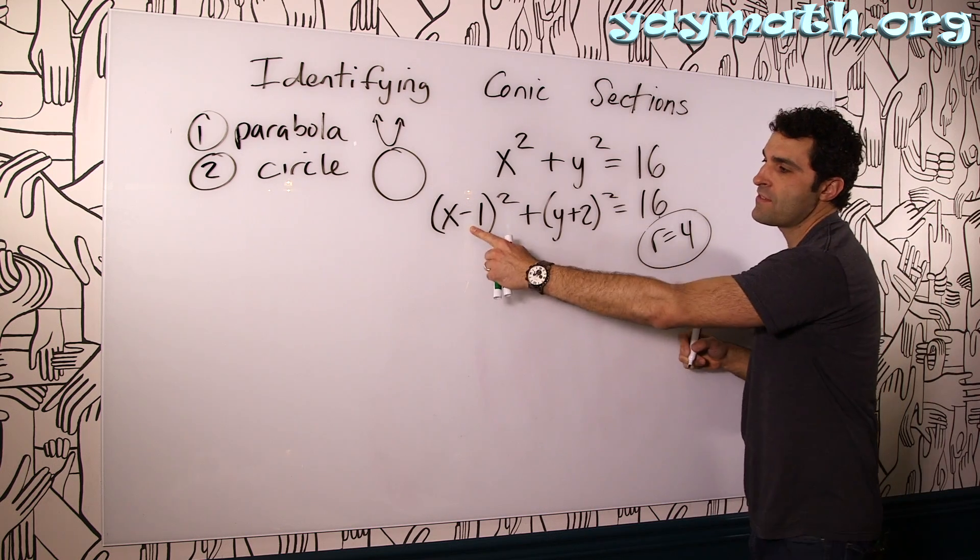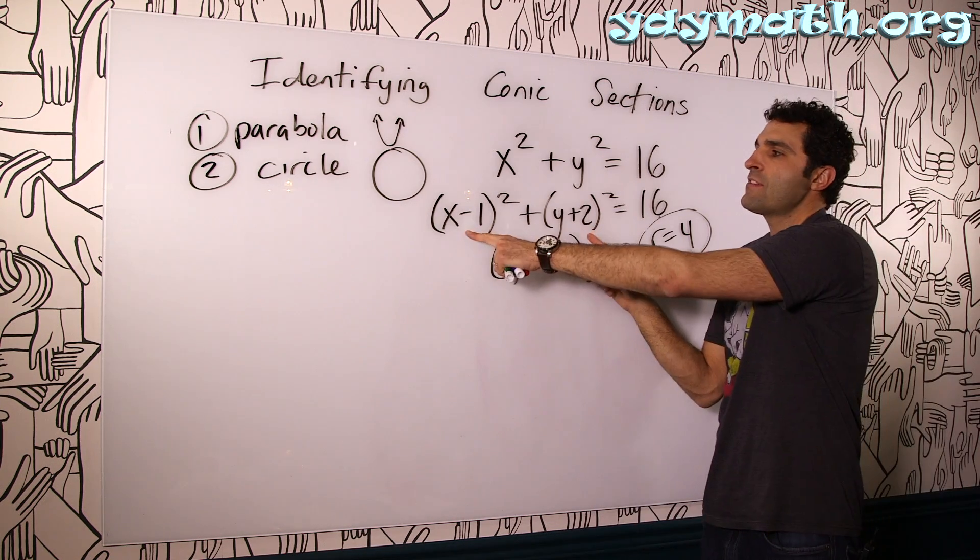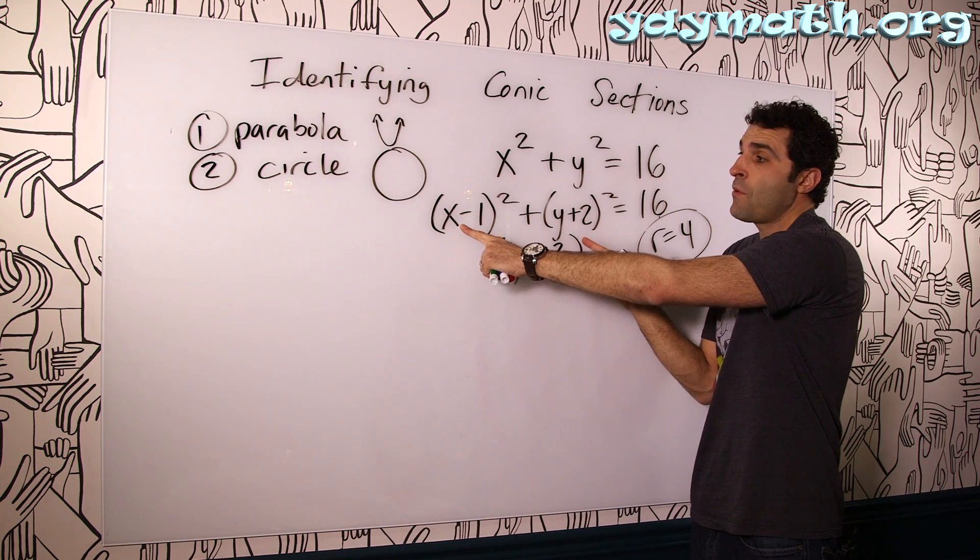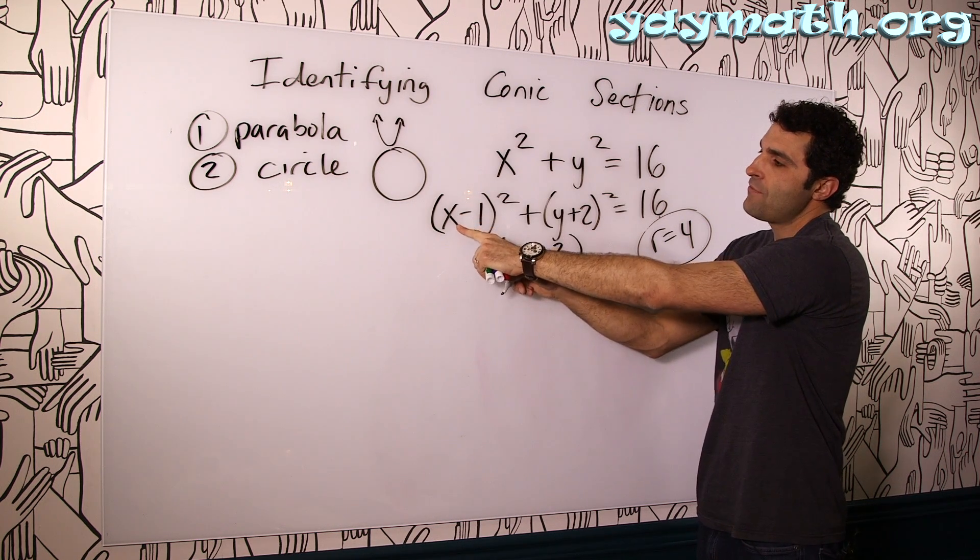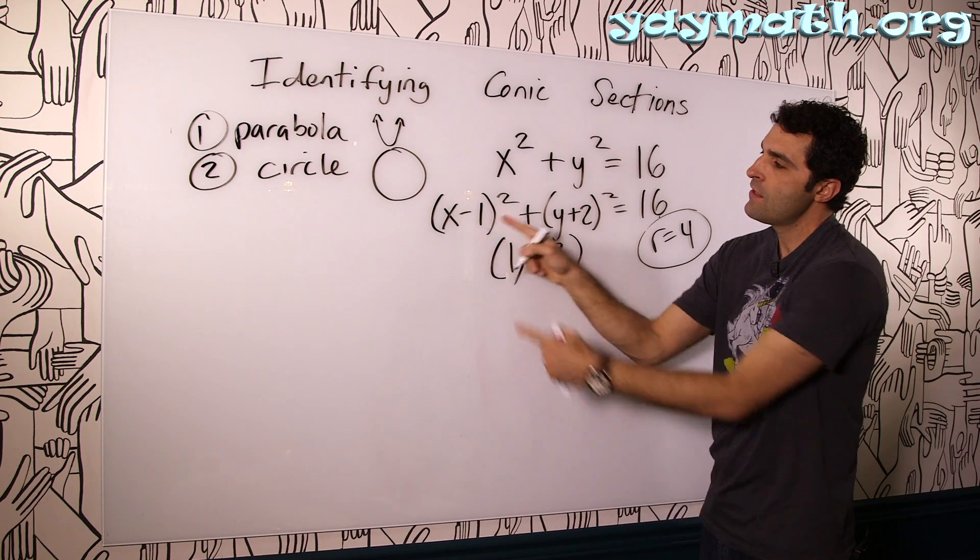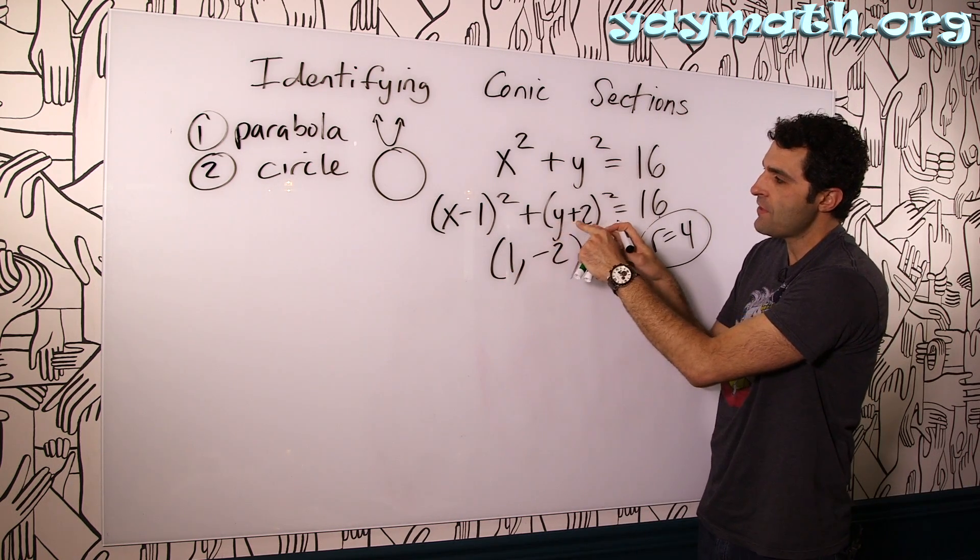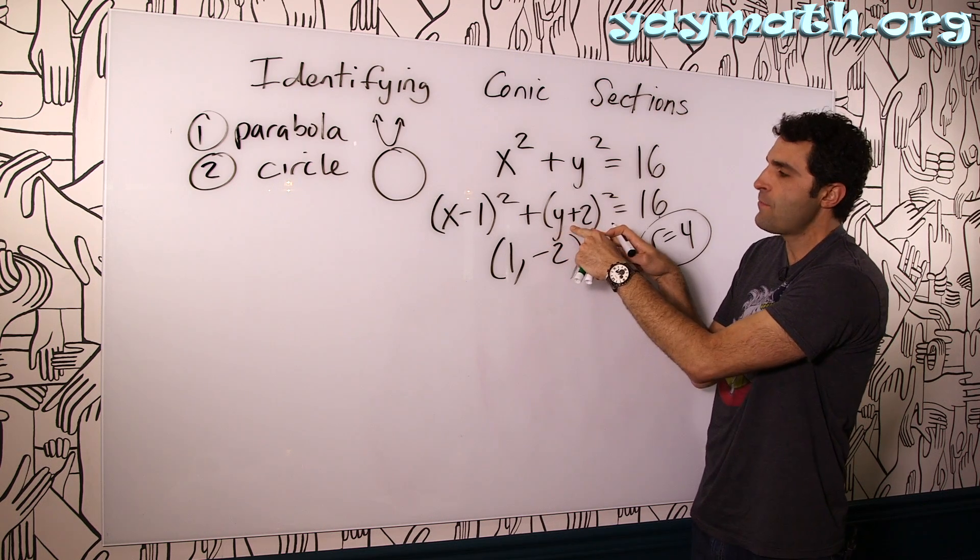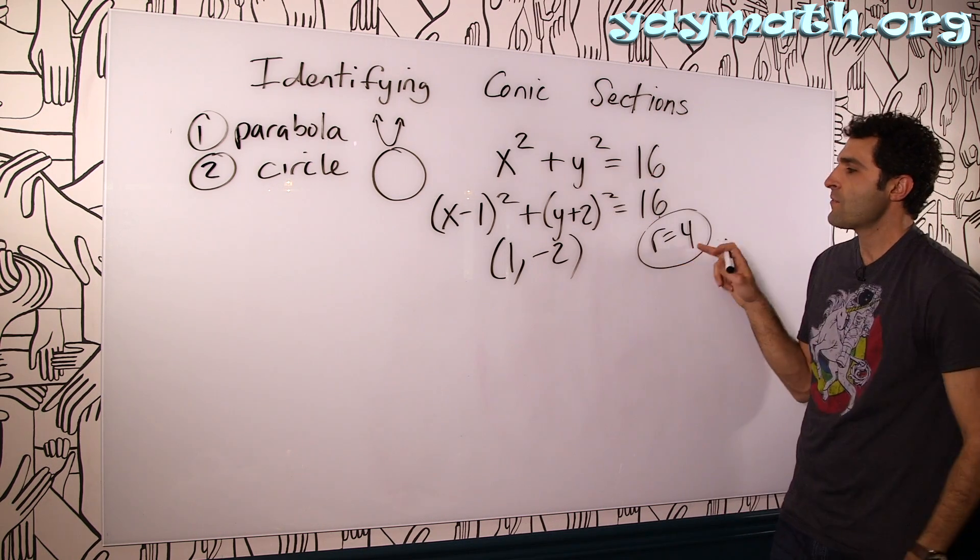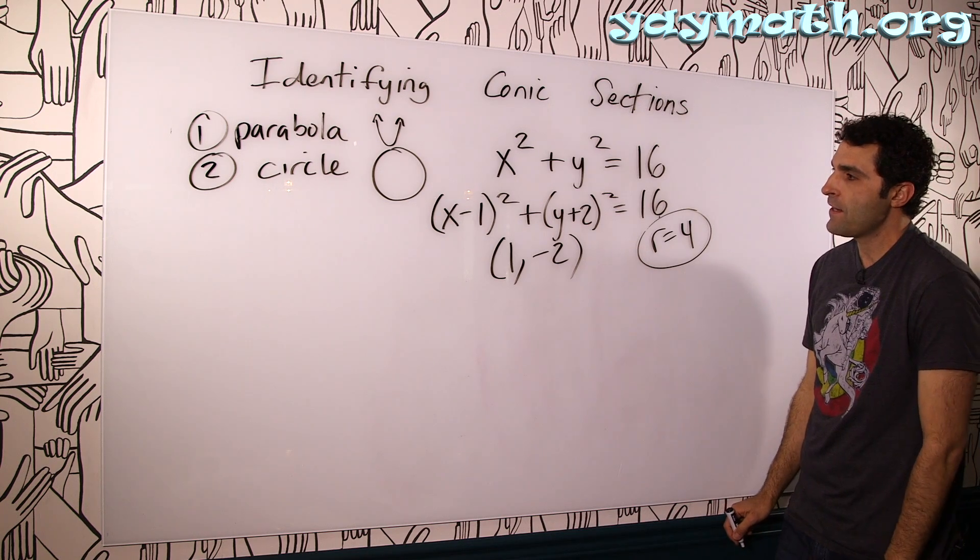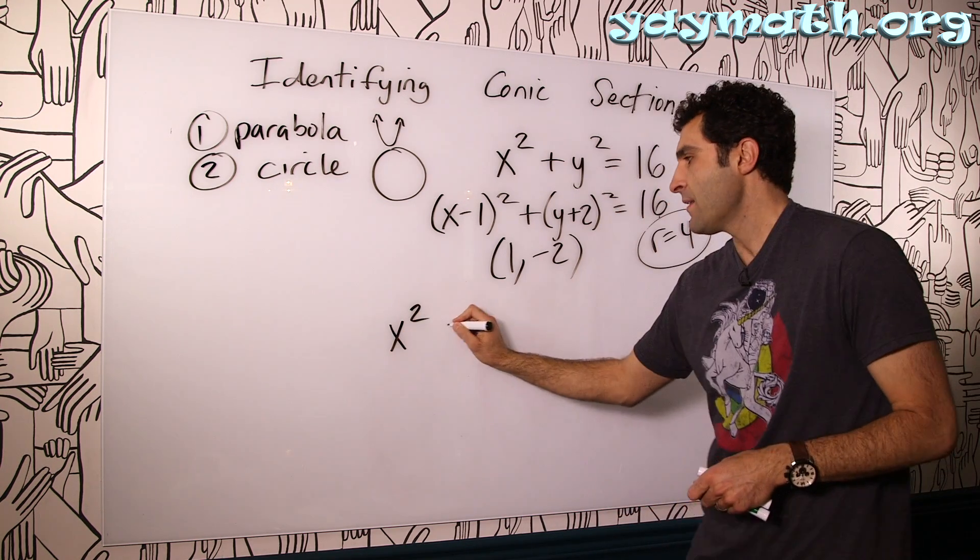So you'll notice both of them squared and the radius is four. It doesn't matter how you slice it. This could be x minus one squared plus y plus two squared equals some sort of other radius. Let's put 16 again. Why not? So the r is still four. This is still a circle. The center is one negative two. You'll notice this opposite effect, similar to what we had within the square of the parabola.